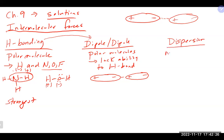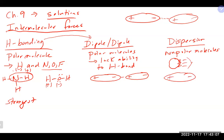The weakest intermolecular force is dispersion forces, which is the main type of interaction for non-polar molecules. Non-polar molecules share electrons equally overall and are essentially neutral — no permanent positive or negative side. However, electrons moving around can temporarily migrate to one side, creating a temporary negative region and a positive region on the other side.